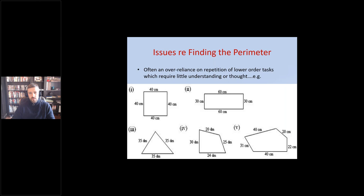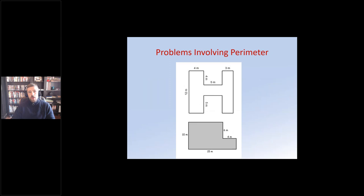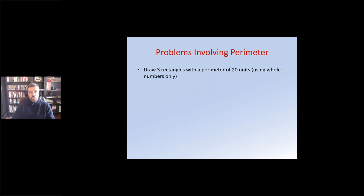For this triangle, we're literally measuring 90 meters plus 40 meters plus 70 meters, so the perimeter is 200 meters. One of the issues I've often found about finding the perimeter is that we often over-rely on the repetition of lower-order tasks which require little understanding or thought. If I opened a maths textbook on perimeter I might get a load of exercises where students are just shown to add each side together. Getting students to repeat that over and over is really just a repetition of a procedure, and they'll generally use their calculator without thinking about what they're doing.